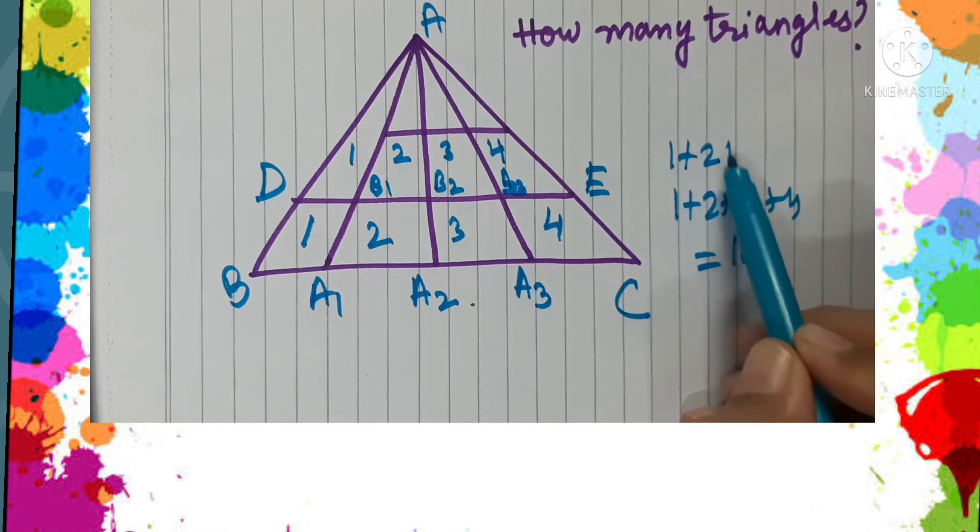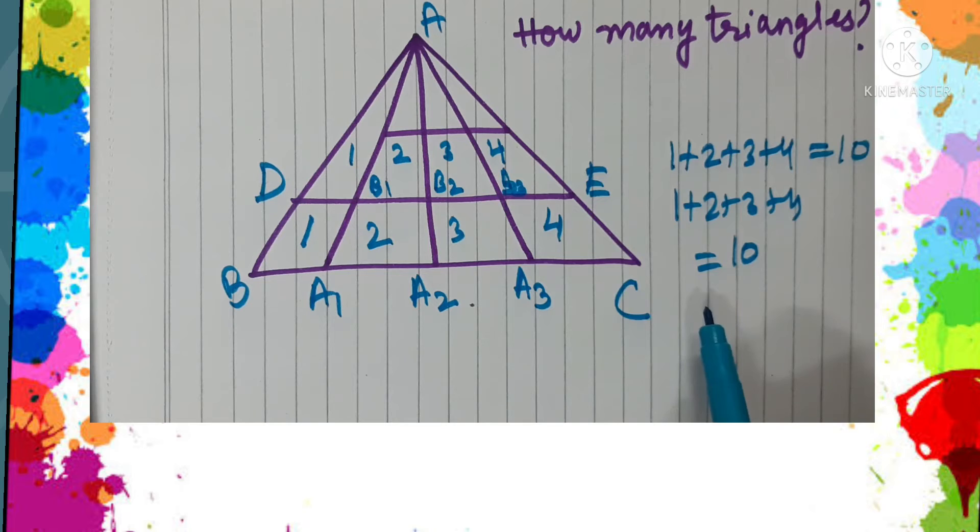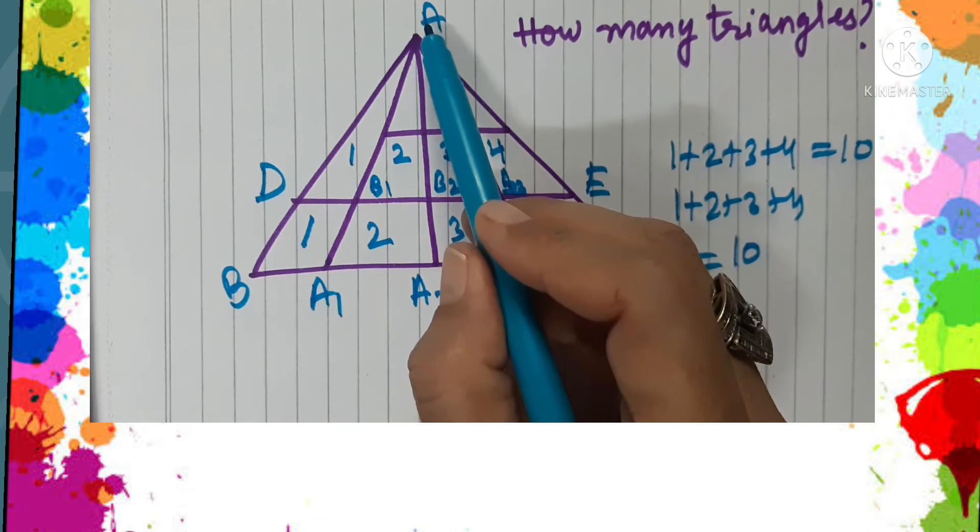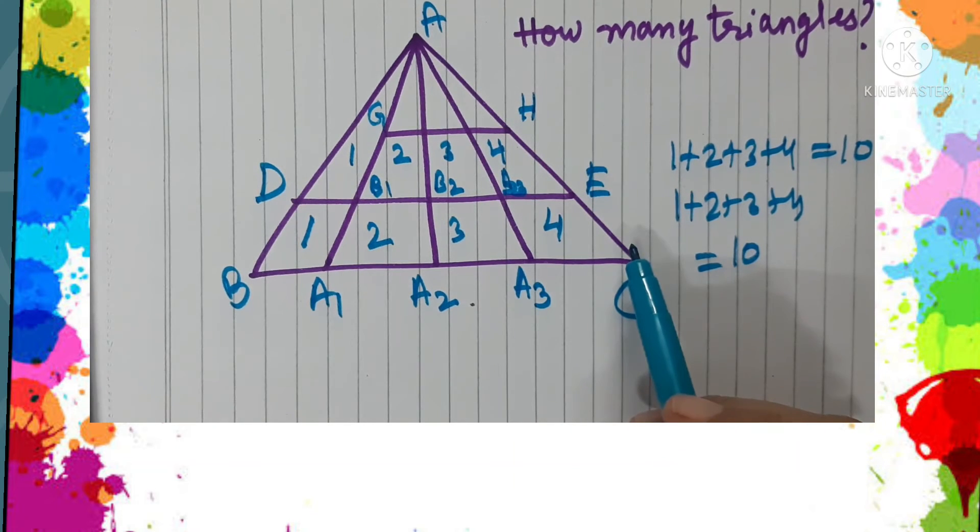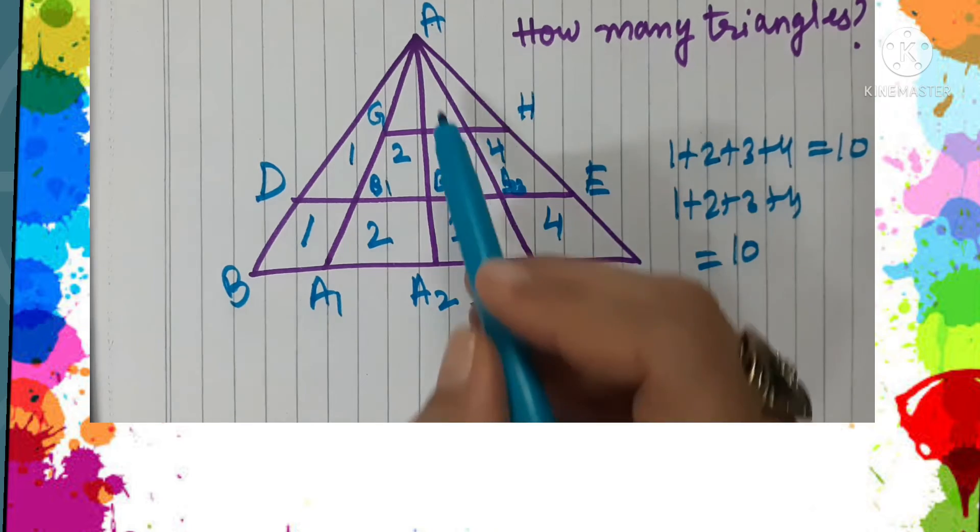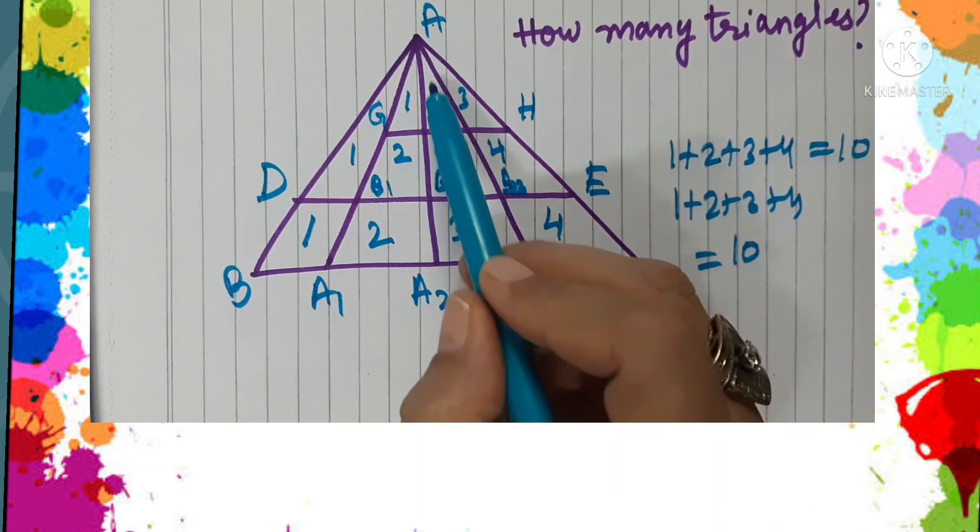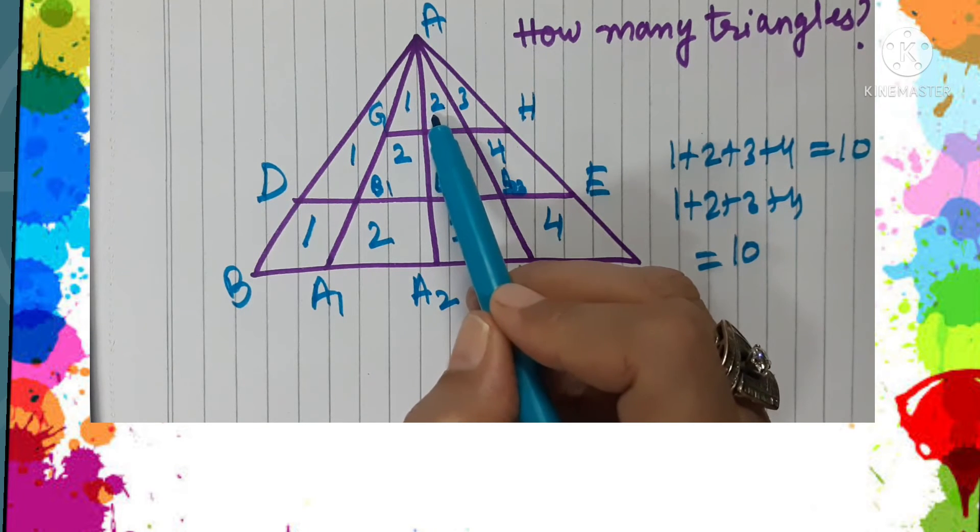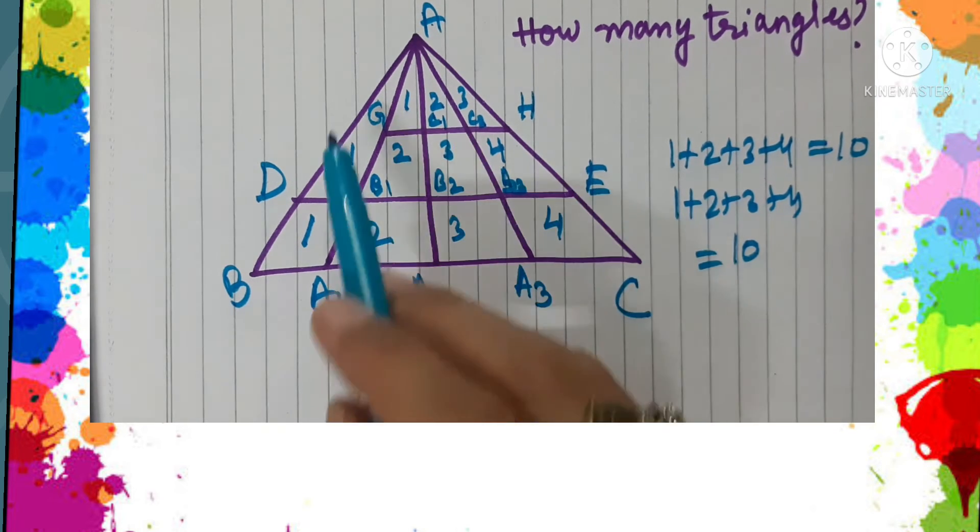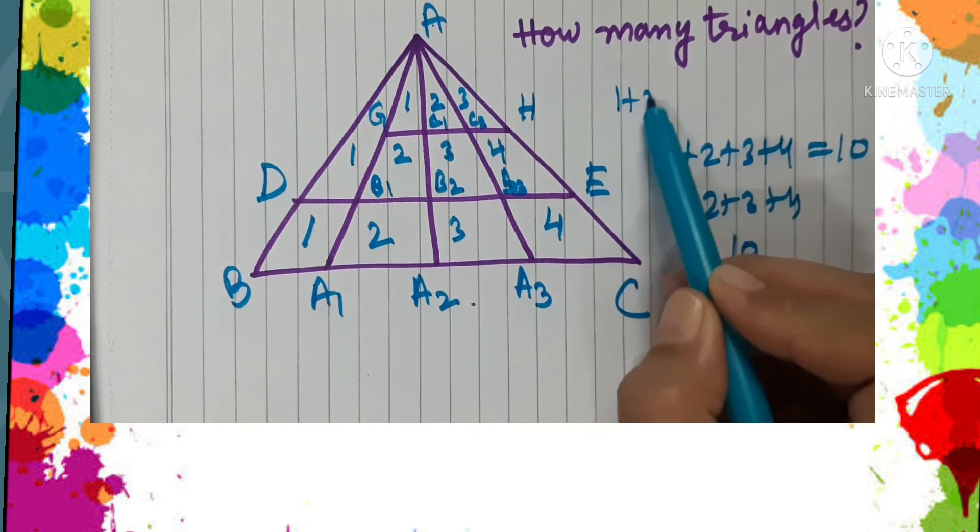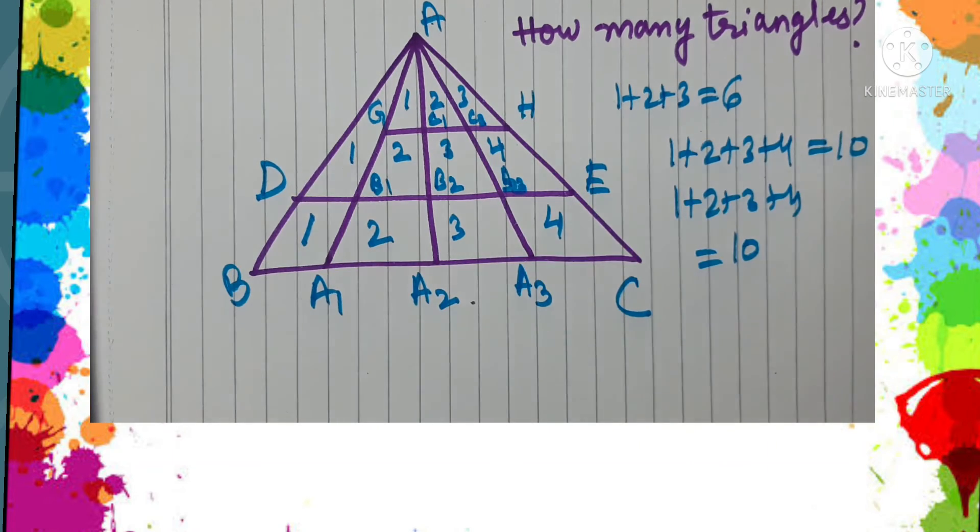Now consider the last triangle, which is AGH. You see that this triangle AGH is again divided into three parts—1, 2, and 3—with the line segments. You can name ac1 and ac2. So the number of triangles will be 1 plus 2 plus 3, which is 6.